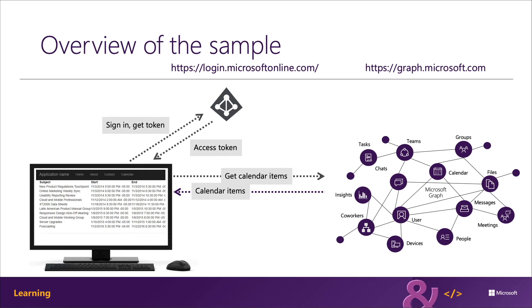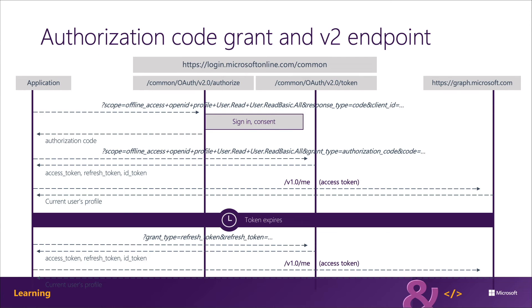Let's look at an overview of the application. The user first signs into the web app, which redirects them to Microsoft Identity's sign-in page. Once the user authenticates and goes through the consent experience, they are redirected back to the ASP.NET web app. The redirect includes an authorization code that the web app uses to request an access token from Microsoft Identity. This happens server-side using the confidential client previously covered. Once the web app has the access token, it can call Microsoft Graph to fetch calendar items using the .NET SDK.